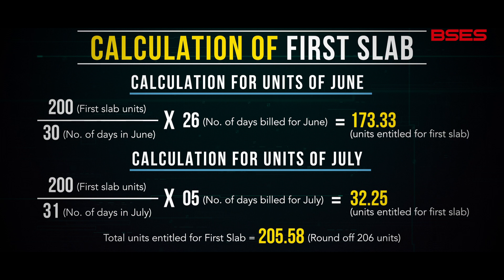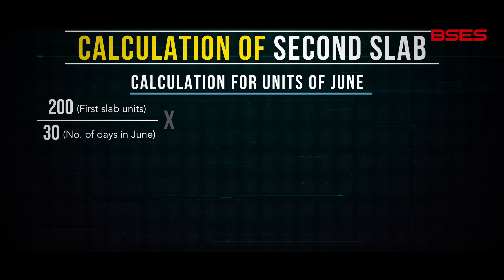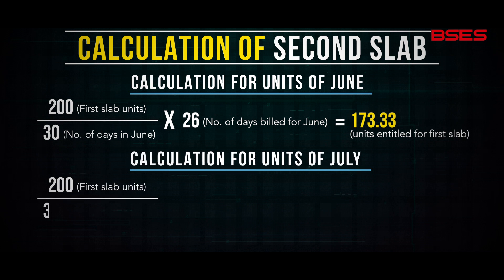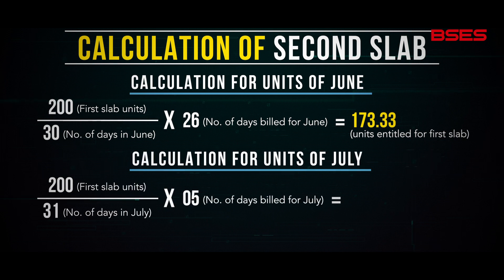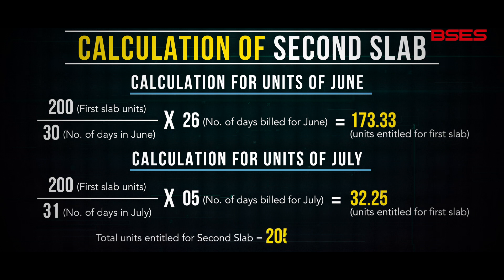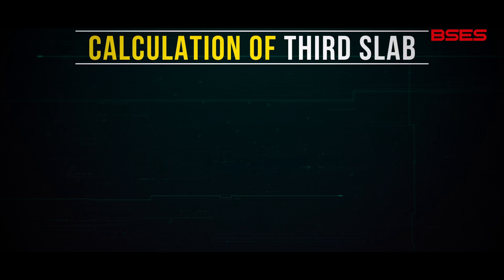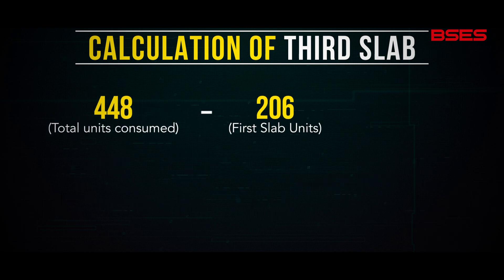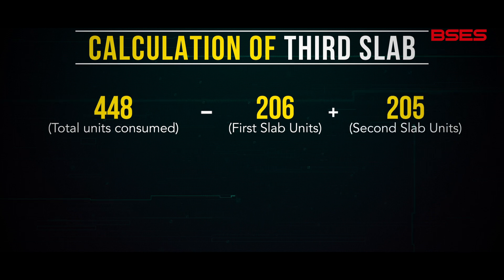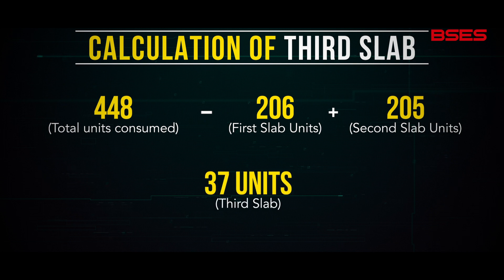This calculation was for the first slab. Now we will do the same type of computation for the second slab. For the third slab, the calculation is simple: take the total consumed units of 448 and reduce the first slab units of 206 and the second slab units of 205, and this will give us 37 units, which is the value for the third slab.